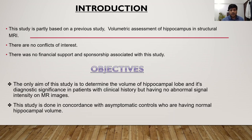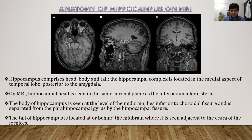The study is done in concordance with asymptomatic controls who are having normal hippocampal volume. Coming to the anatomy of hippocampus on MRI, hippocampus comprises of head, body and tail.